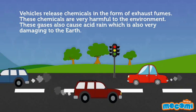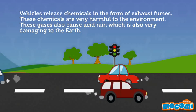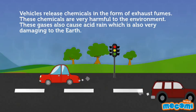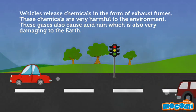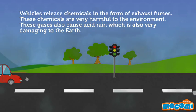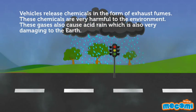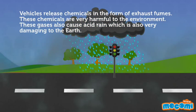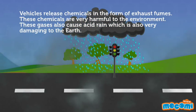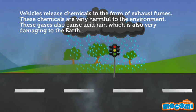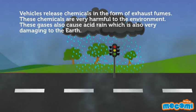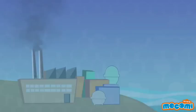Vehicles release chemicals in the form of exhaust fumes. These chemicals are very harmful to the environment. These gases also cause acid rain, which is also very damaging to the earth.